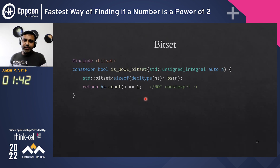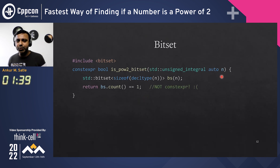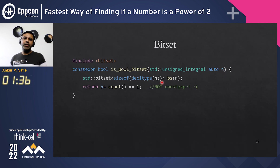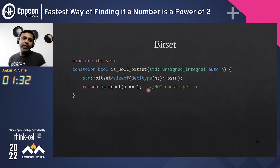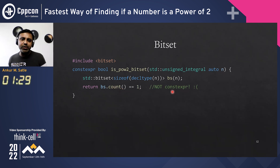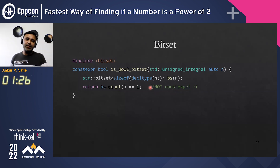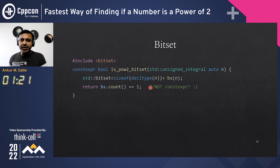You could use a bitset — this is a smart way. You take n and create a bitset out of it, and then you can check the count. This is not constexpr; all the other solutions can be constexpr, but this one wasn't — I discovered that when I tried this. But that's neat: in just one line you could do this.